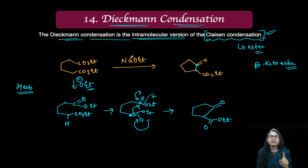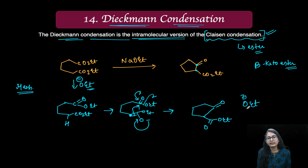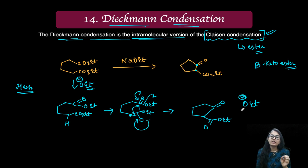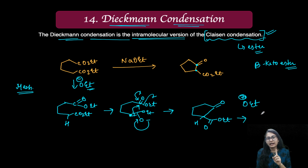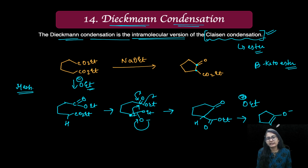Now don't think that because we started with the ethoxide you are going to get back the ethoxide as a regenerated catalyst. Why? Because this ethoxide group which is generated is going to take up this proton and it is still going to give you that stable enolate.